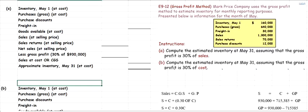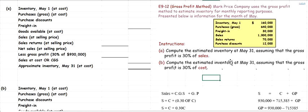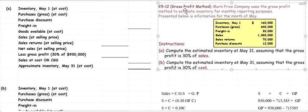Hello ladies and gentlemen, this is Osman Ali and the video I'm recording is the solution of exercise 9-12. It's based on the third inventory valuation technique called the gross profit method. The gross profit method is quite useful when you do not have information on the unit price or quantity of inventory, and yet you expect to find the ending cost of inventory and cost of goods sold.